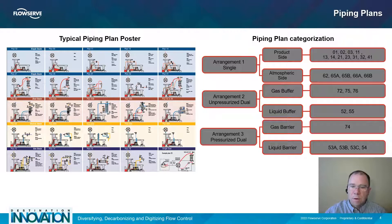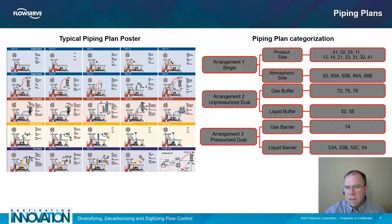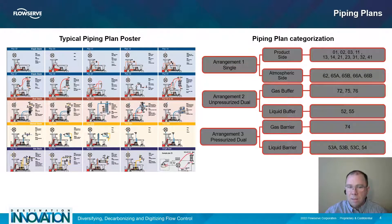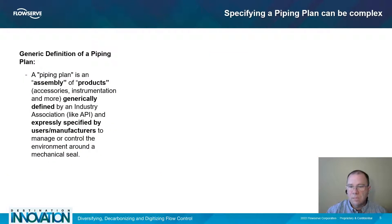As you start to select a piping plan, it's very important to first narrow down your choices. There are a lot of different piping plans available, as demonstrated by a typical piping plan poster available from any mechanical seal manufacturer. First, focus on the type of mechanical seal you have — whether it's a single seal, unpressurized dual seal, or pressurized dual seal — then focus on what you need that piping plan to do. This process will narrow down your choices and make it much easier to select the proper piping plan for your application.